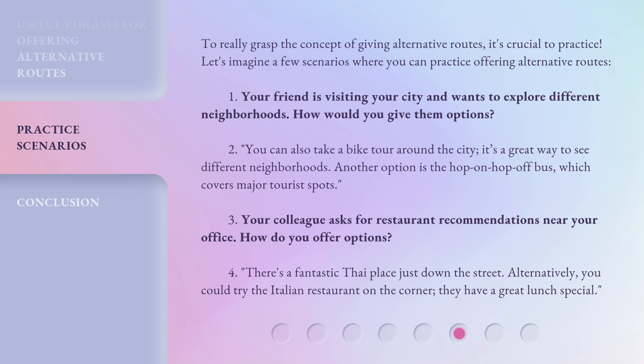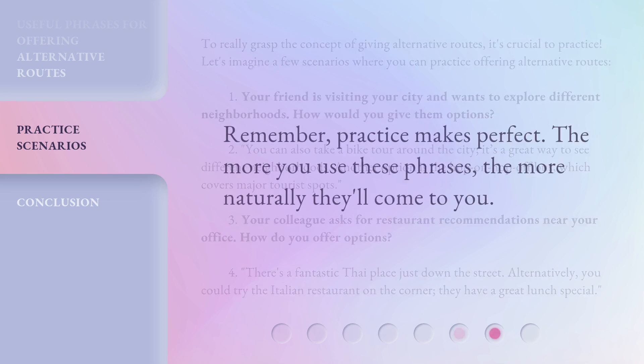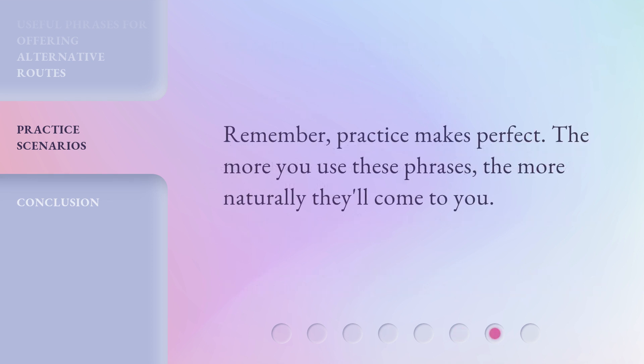Your colleague asks for restaurant recommendations near your office — how do you offer options? There's a fantastic Thai place just down the street. Alternatively, you could try the Italian restaurant on the corner; they have a great lunch special. Remember, practice makes perfect. The more you use these phrases, the more naturally they'll come to you.